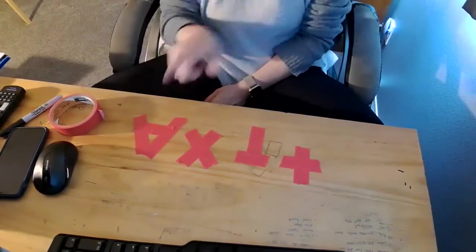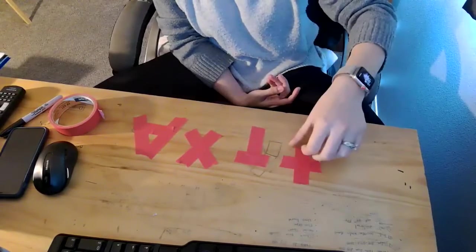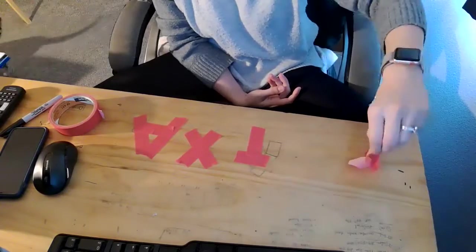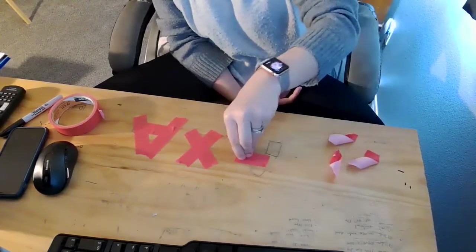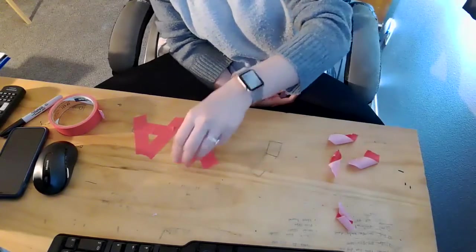Hey, look at that. I did an A, an X, a T, and a T. And another fun thing you can do with masking tape is you can rip it off. This is great for the fine motor skills to just take tape off the table or off the counter and reuse it.